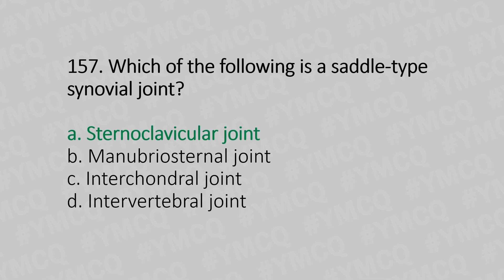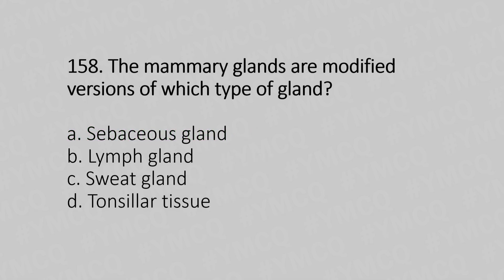Now let's move to question number 158. The mammary glands are a modified version of which type of gland? Option A: sebaceous gland. Option B: lymph gland. Option C: sweat gland. Option D: tonsillar tissue. And the answer is Option C: sweat gland.